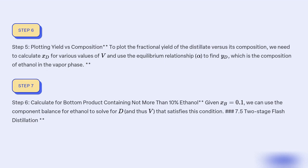Step 6: Calculate for a bottom product containing not more than 10% ethanol. Given xB = 0.1, we can use the component balance for ethanol to solve for D and thus V that satisfies this condition.